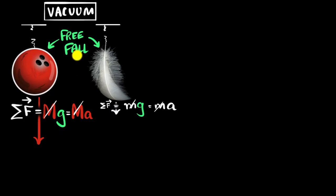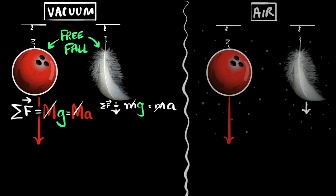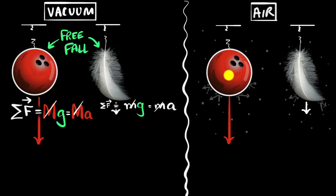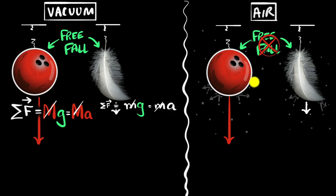A beautiful thing about free fall is that objects will always have the same acceleration — g — regardless of what their mass is. In contrast, when you drop them in air, the air molecules hit the surface and start putting an upward force on them: the air resistance. Now because along with gravity there's also air resistance, it is no longer in free fall. We only say it's in free fall if gravity is the only force acting on them.